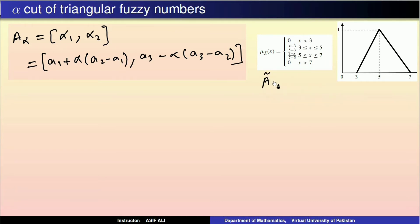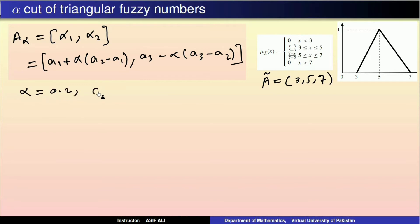اب ہم اس کی example کرتے ہیں: A tilde is equal to (3, 5, 7)۔ اس کا alpha cut find کرنا ہے۔ ہم 3 values find کریں گے: alpha = 0.2, 0.5, and 0.8۔